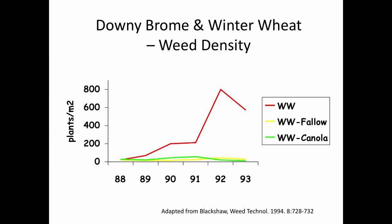But if you grow winter annual crops over and over again, something else comes in. This is Bob Blackshaw's data from Lethbridge showing that when you grow winter wheat repeatedly, the winter annual weed downy brome—which has the same life cycle—increases dramatically. You can reduce that by doing anything else: going to fallow or going to a summer annual crop like canola.